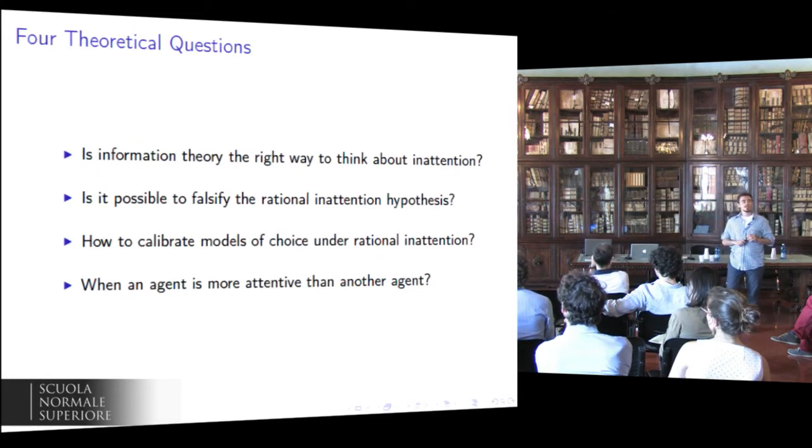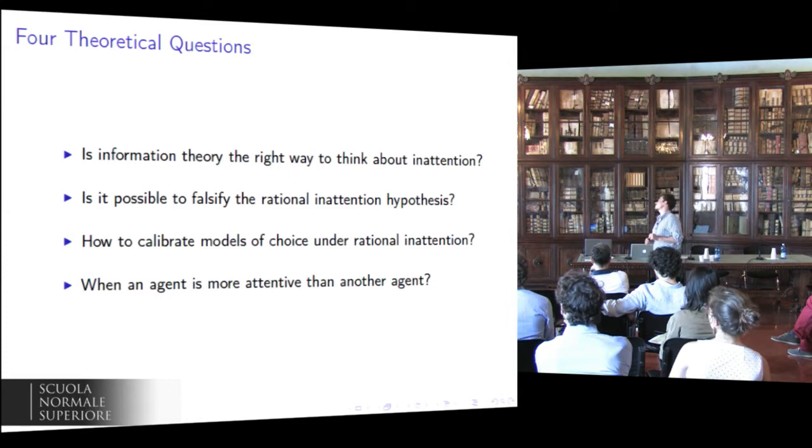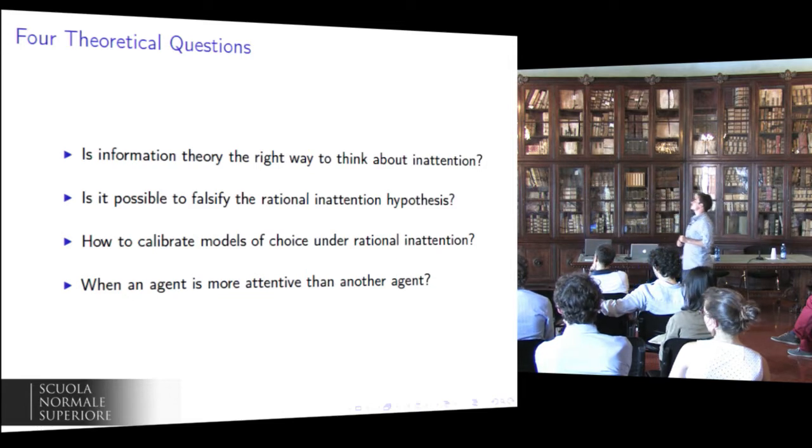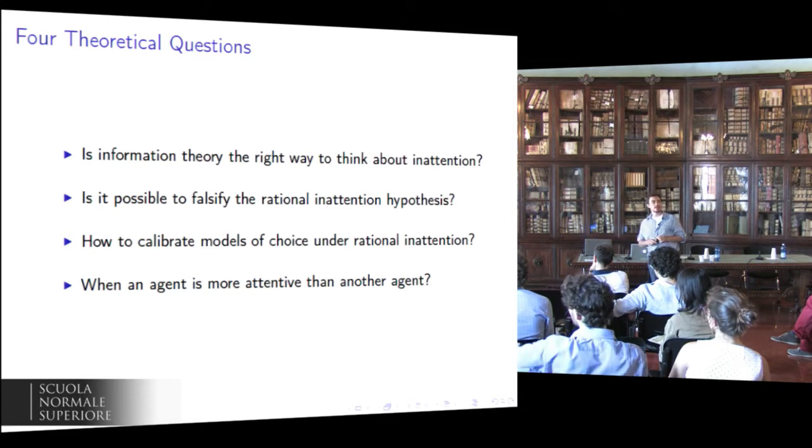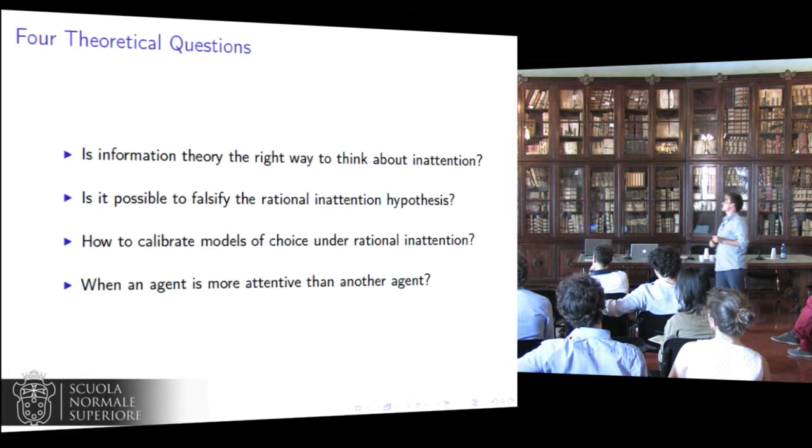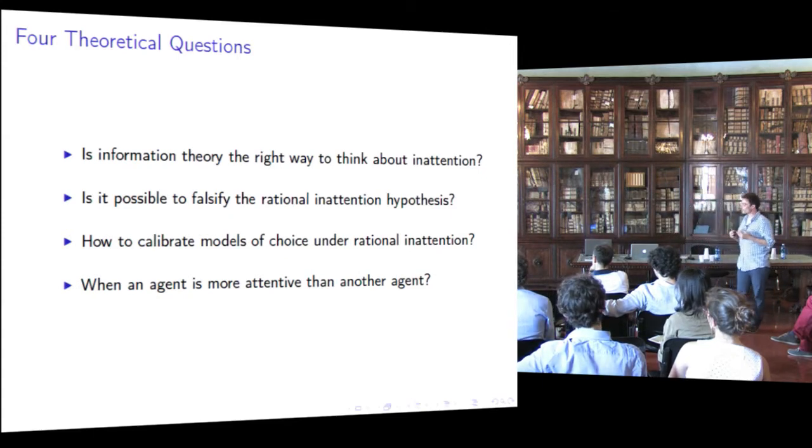This applied literature on rational inattention raises at least four interesting theoretical questions. Is information theory the right way to think about inattention? Is it possible to falsify the rational inattention hypothesis? How to calibrate models of choice under rational inattention? When we can say that an agent is more attentive than another agent?